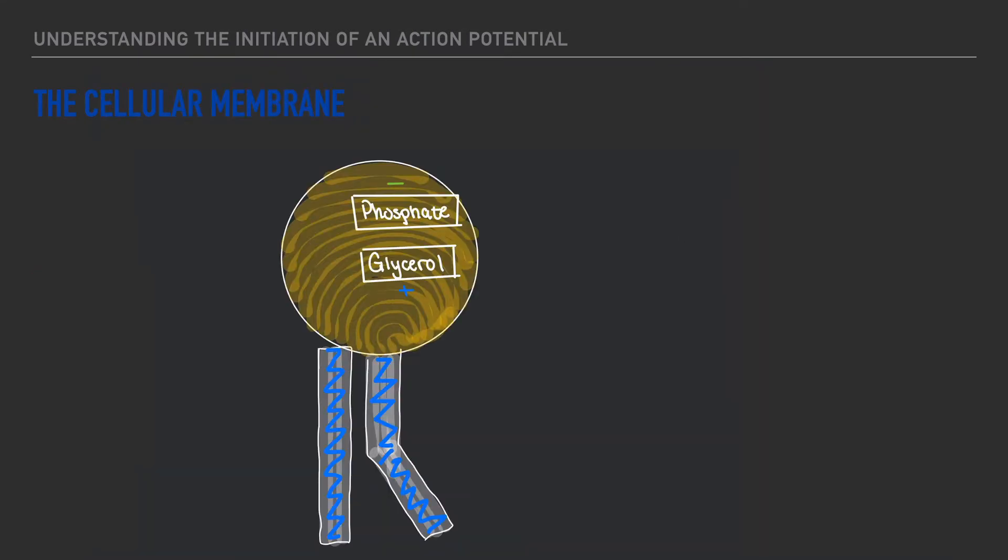Now as we think about the generation of an action potential and knowing that it occurs or happens at the cellular membrane it makes sense for us to explore the cellular membrane a little further. So as we go to explore it we'll notice that there are two hallmark features and you may be very well familiar with these.